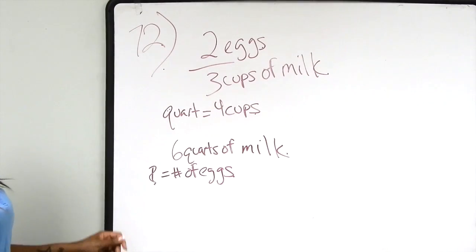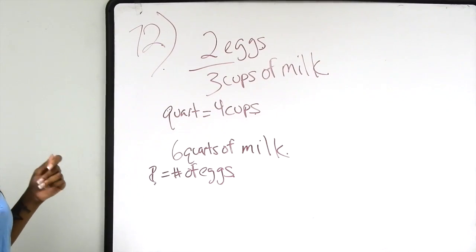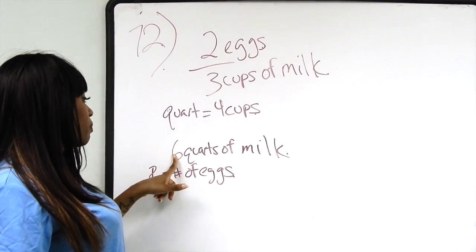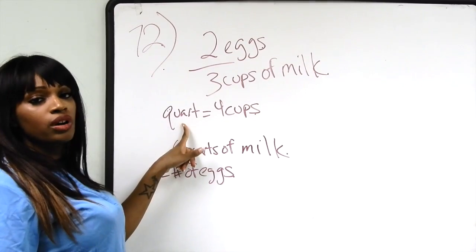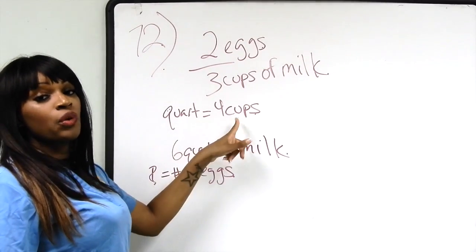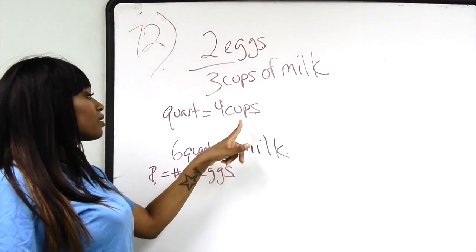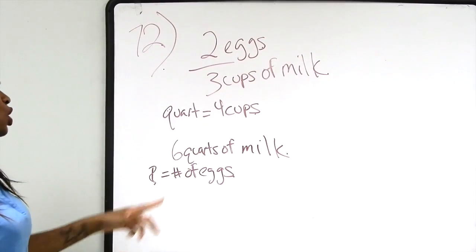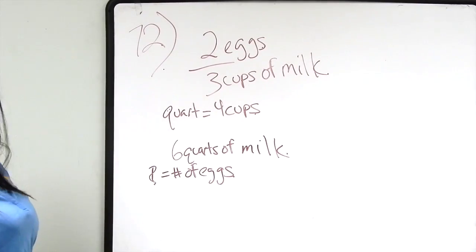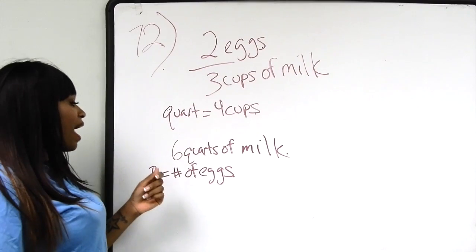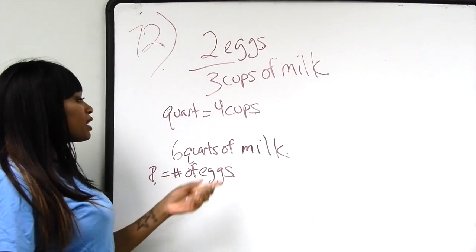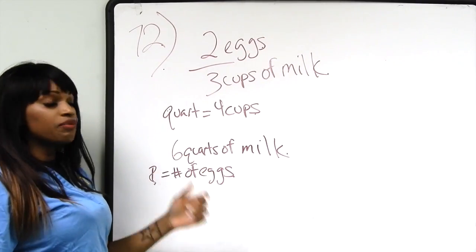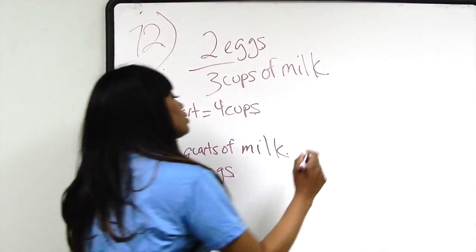So what we can first do is: there are six quarts of milk, and for every quart we know there are four cups. So we need to find the total number of cups of milk. We're going to take four cups and multiply it by the six quarts of milk.